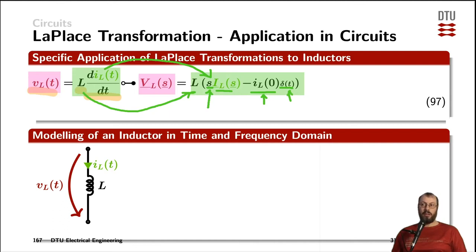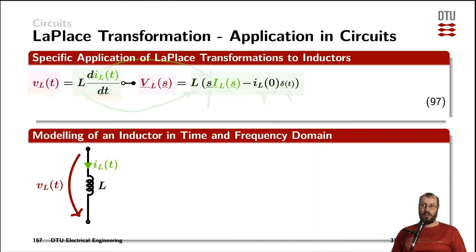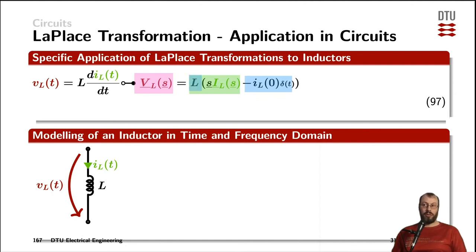I have written the Dirac function a little smaller here, because very often people simply omit it. We now have the inductor voltage on one side of the equation, and two terms on the other side: the first term here, and the second term being the initial current, also multiplied with the inductance L. Both of those — the green and the blue signals — need to be voltages as well.